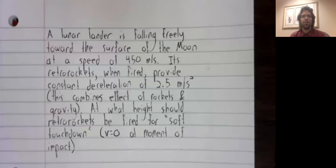Let's look at this specific example. A lunar lander is falling freely toward the surface of the moon at a speed of 450 meters per second. Its retro-rockets, when fired, provide constant deceleration of 2.5 meters per second squared. This is combining acceleration or deceleration due to the retro-rockets and acceleration due to the moon's gravity.